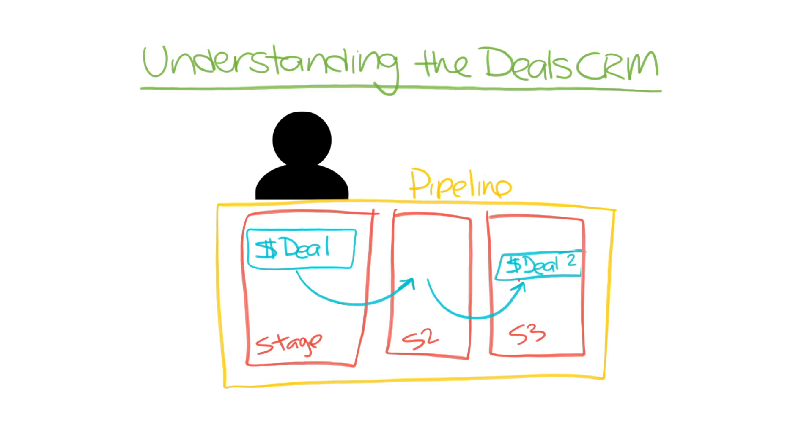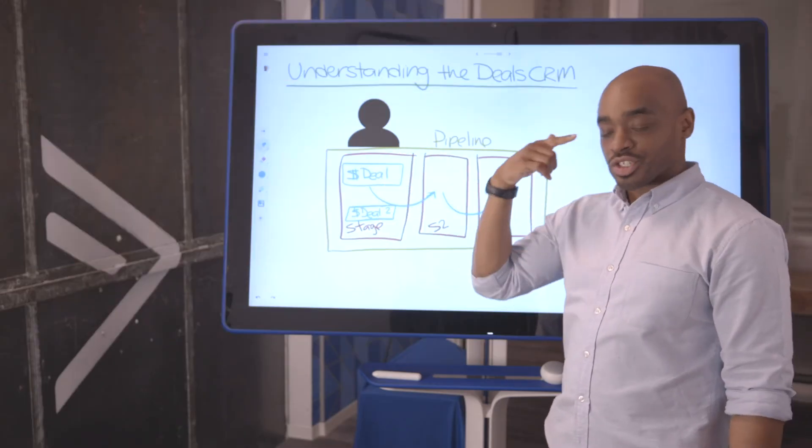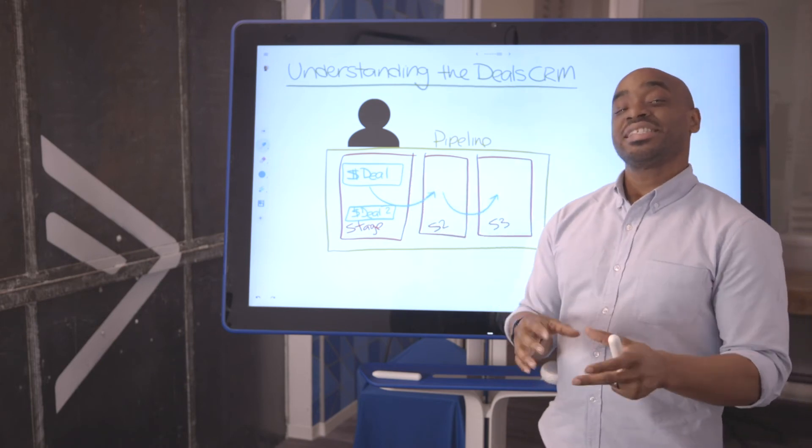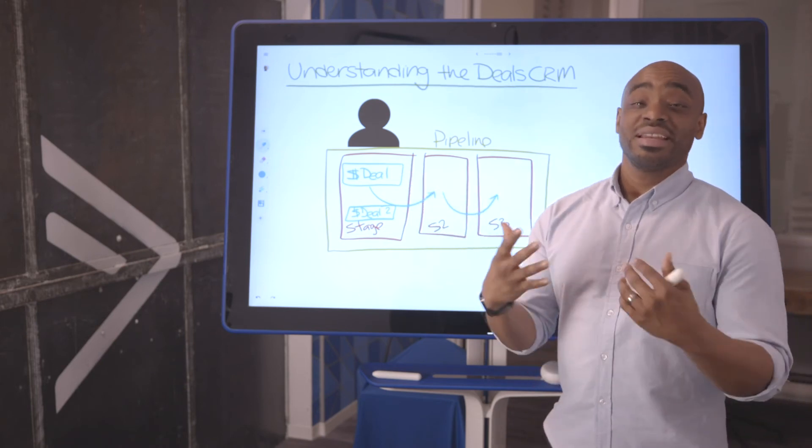So when you view this contact, you'll see multiple deals and just know when you go to the pipeline view and you're looking at the stages, it's the deal that's being automated, not the contact.